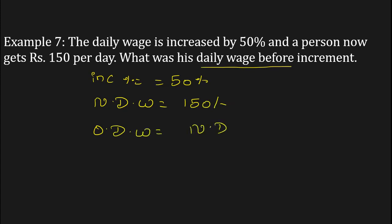Original daily wage = (new daily wage / (100 + percent increased)) × 100. As we know the new daily wage